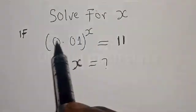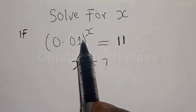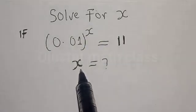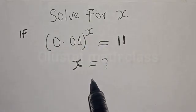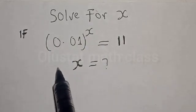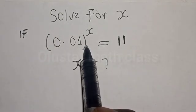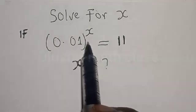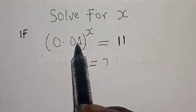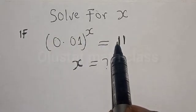Solve for x if 0.01 raised to the power of s is equal to 11. What is the value of s? Hi everyone, welcome to my class. In this class, we want to find the value of s from this given equation. This is an exponential equation. We have 0.01 raised to the power of s is equal to 11.